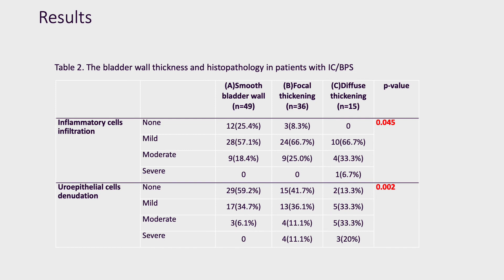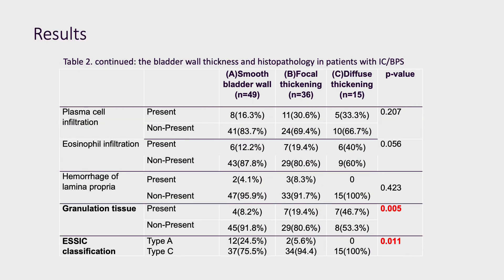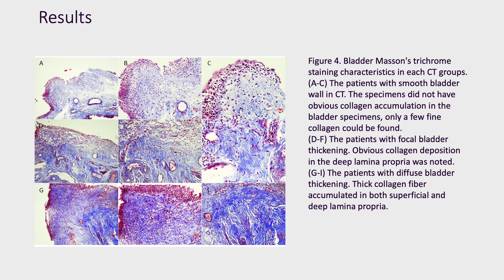Table 2 showed the association between bladder wall thickening on CT and histopathological results. A higher proportion of inflammatory cell infiltration, urothelial cell denudation, and granulation tissue was found in patients with diffuse bladder wall thickening, and was also higher in focal thickening. The proportion of ESSIC type C was higher in IC/BPS patients with diffuse or focal bladder wall thickening. Although fibrosis under H&E staining was not significantly different, Masson's trichrome staining revealed different histopathological fibrosis characteristics in each CT group.